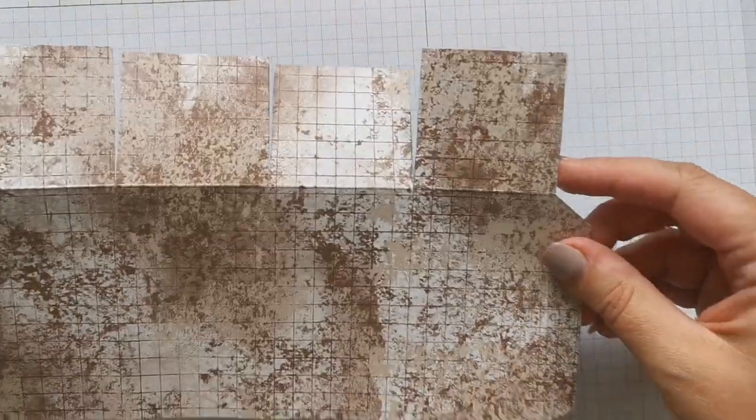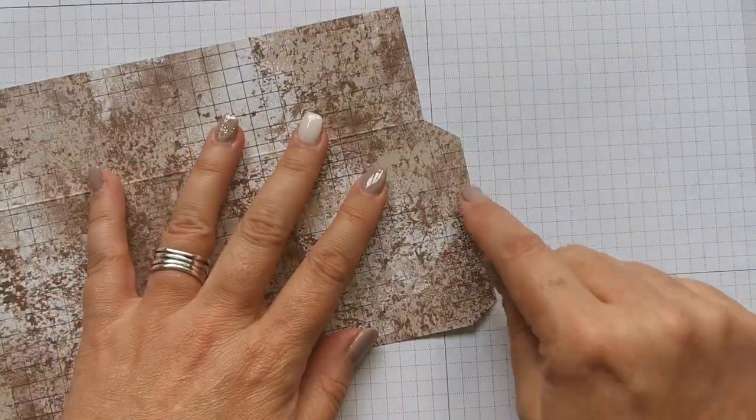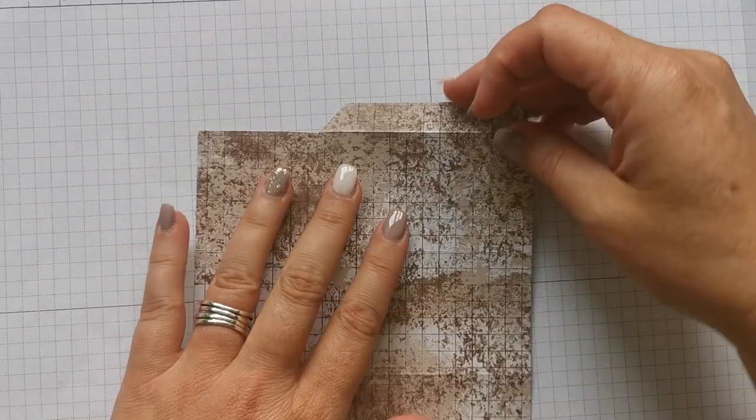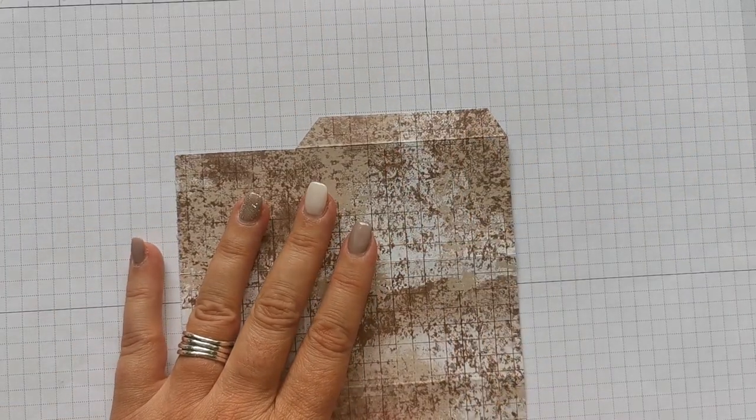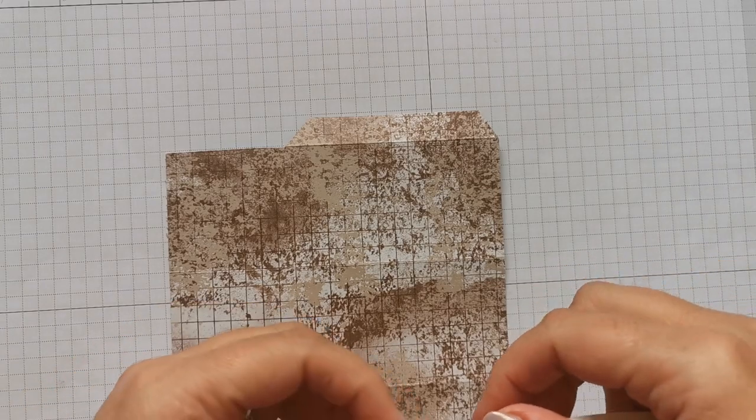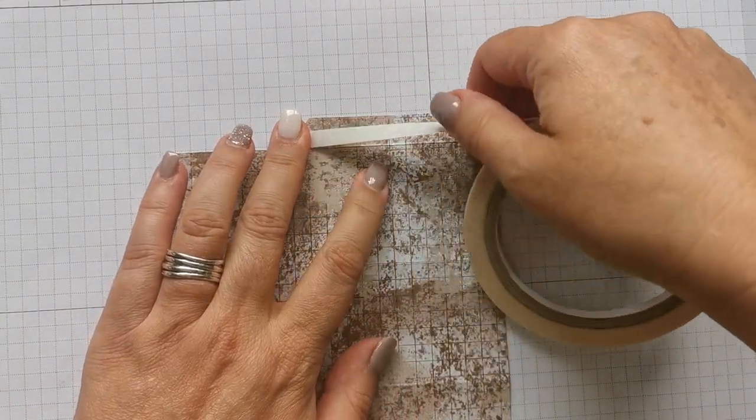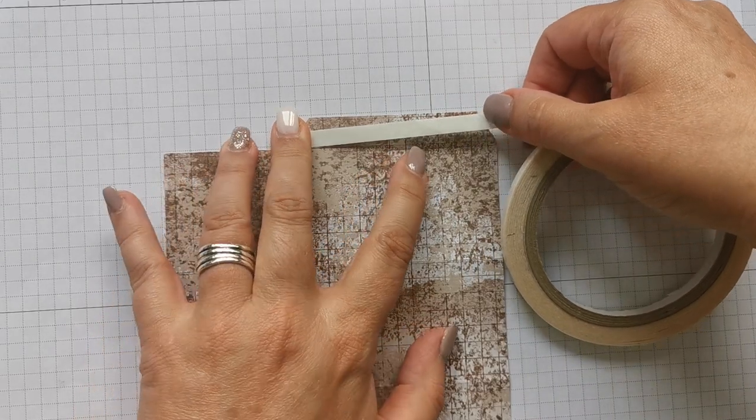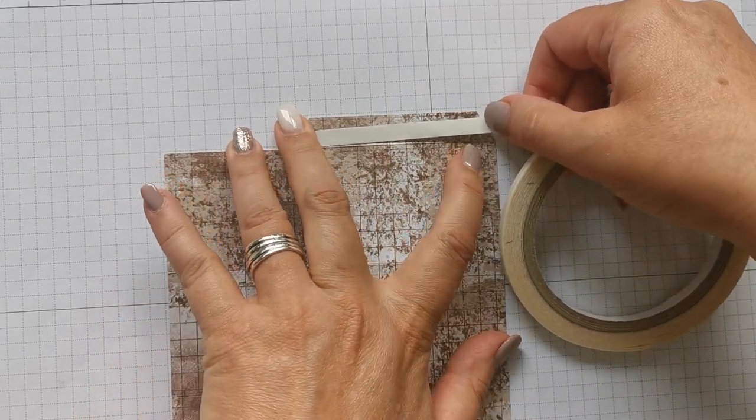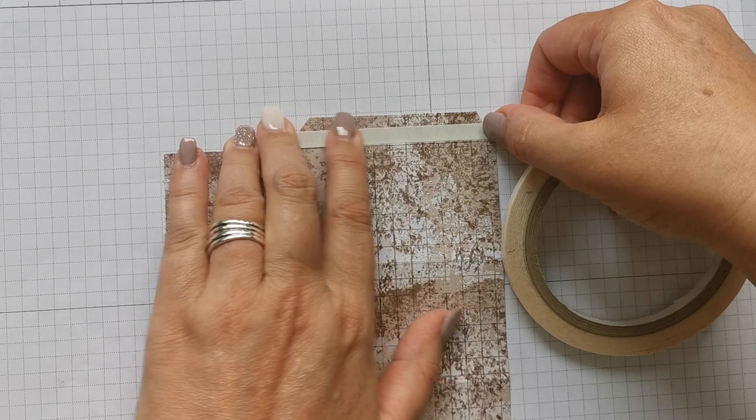So on the right side, so this is the outside of your box, there's your little tab. And we're going to put some, I prefer to use tear and tape. You could use wet glue if you wanted to, but tear and tape is my adhesive of choice for this project. And I'm just going to run that right on that score line, which is extremely difficult to see.